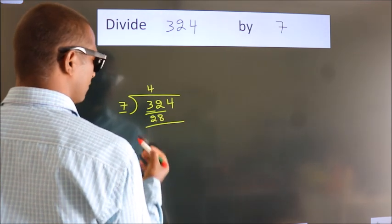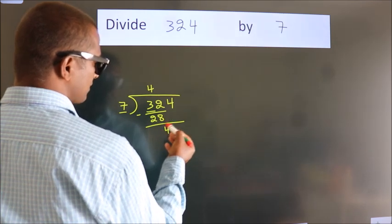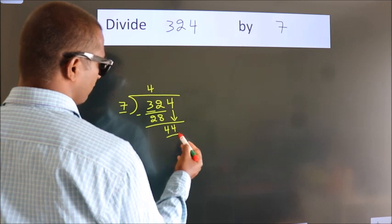Now, we should subtract. We get 4. After this, bring down the beside number, so 4 down. So 44.